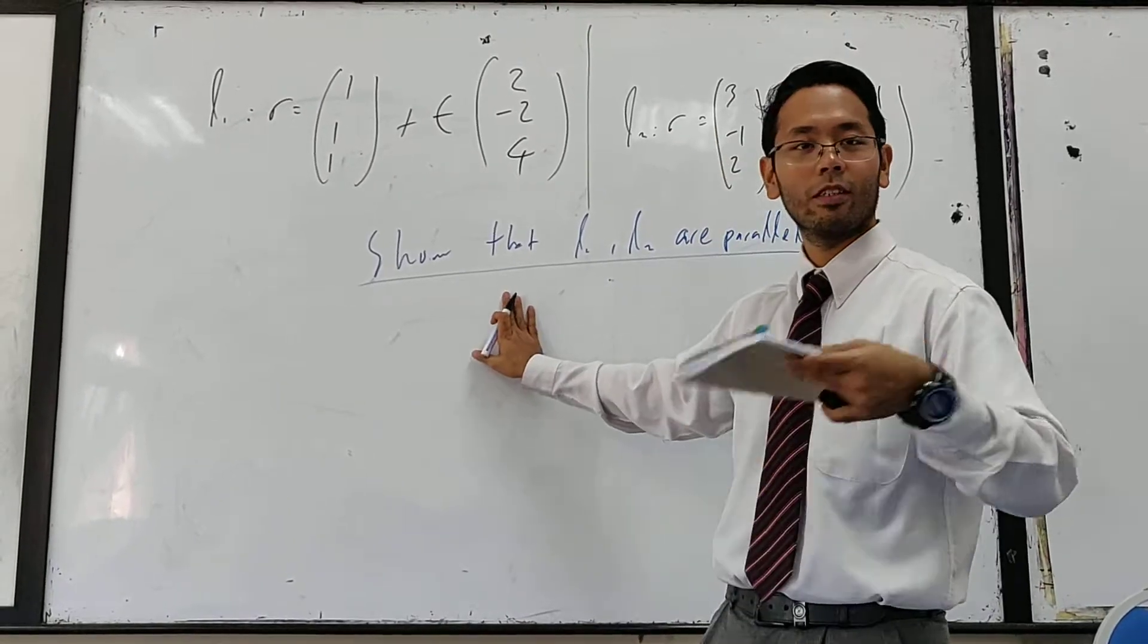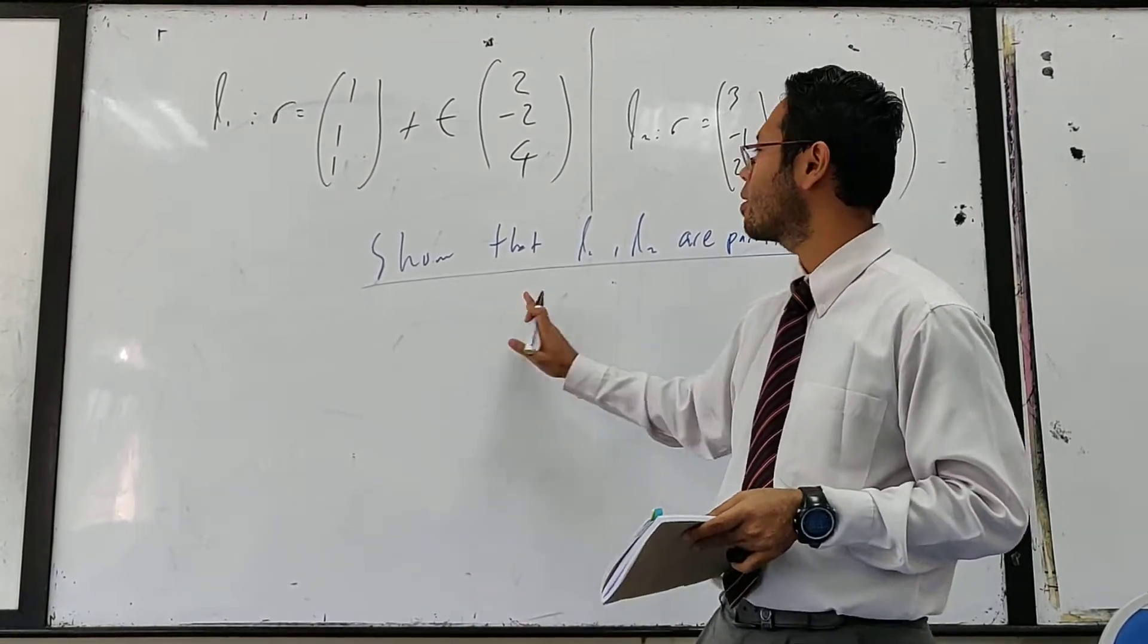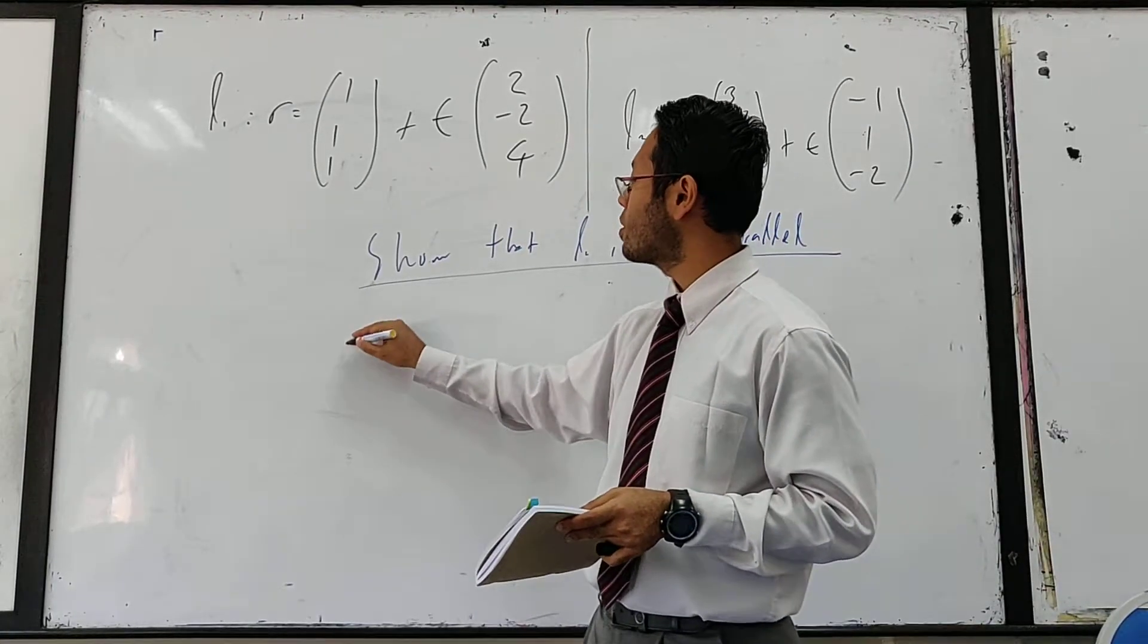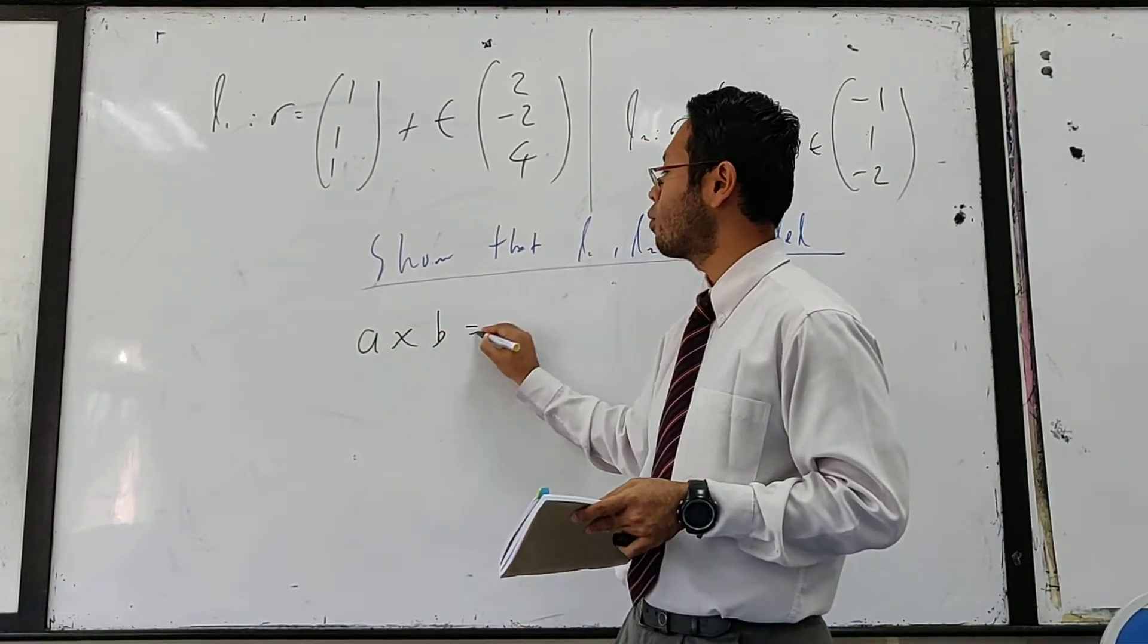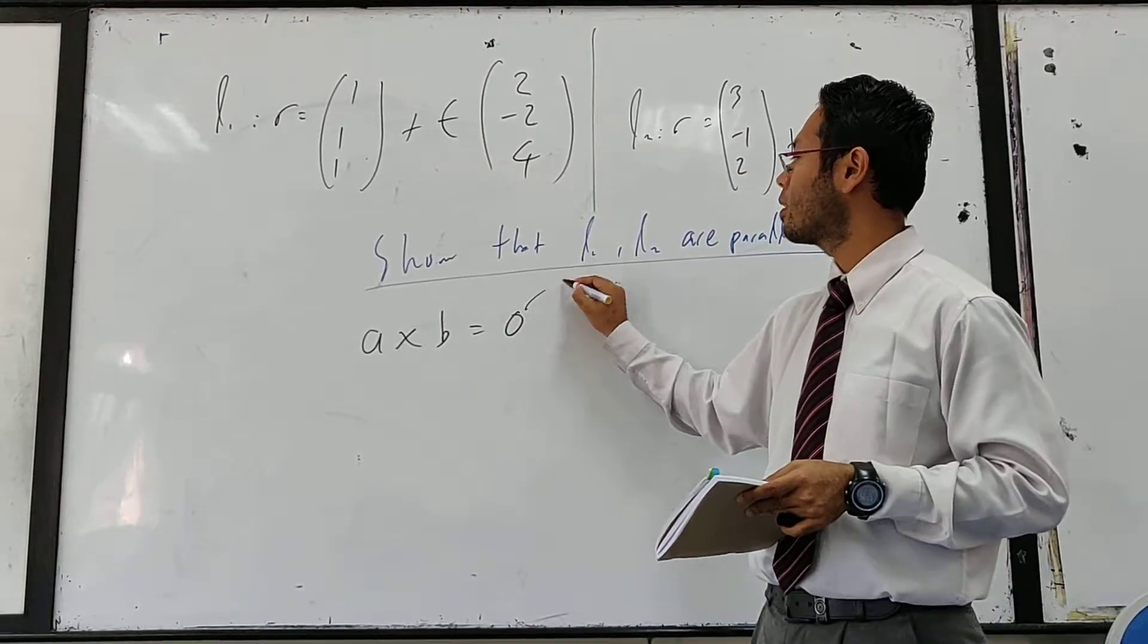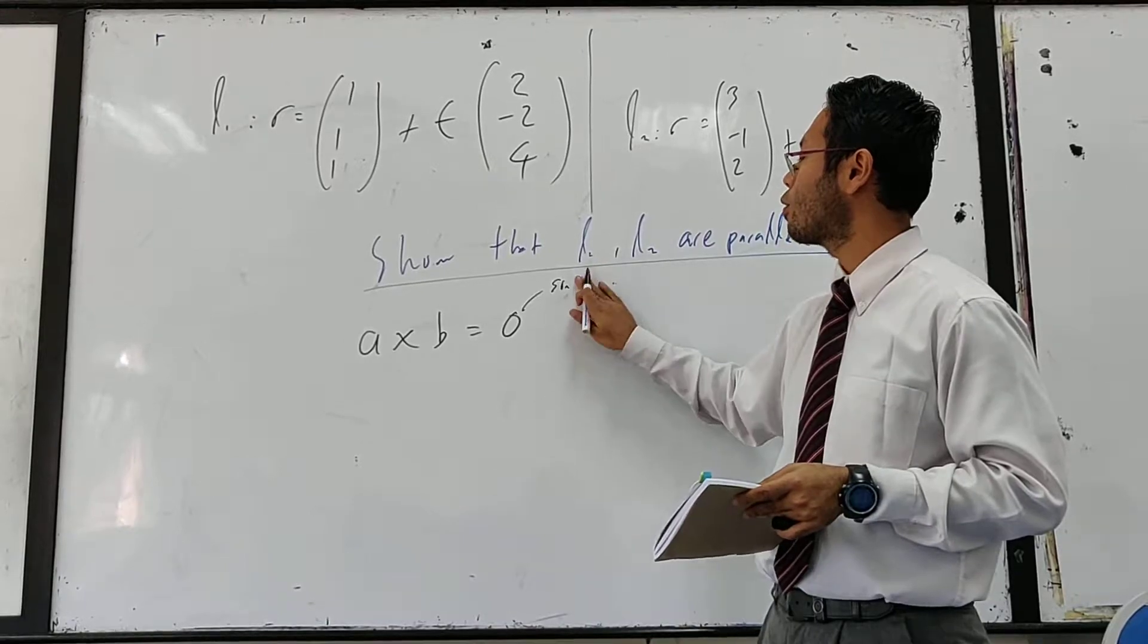Alright, so this is a continuation from our lecture just now. So how do we show that they are parallel? One way that I told you just now is that we use A cross B equals to zero, the cross product, because sin theta, sin zero equals to zero.